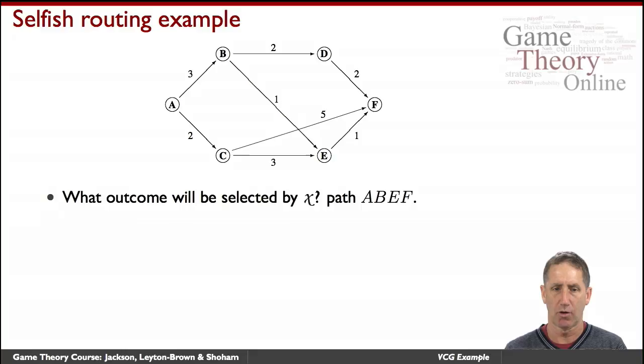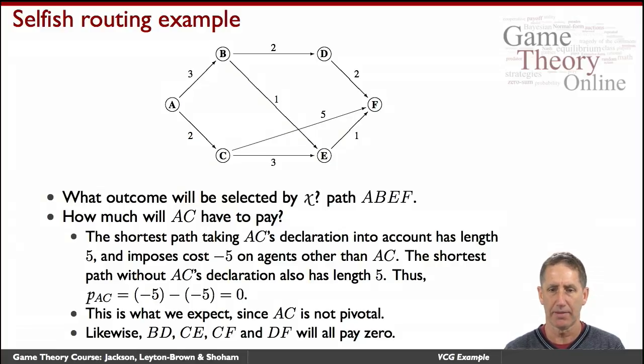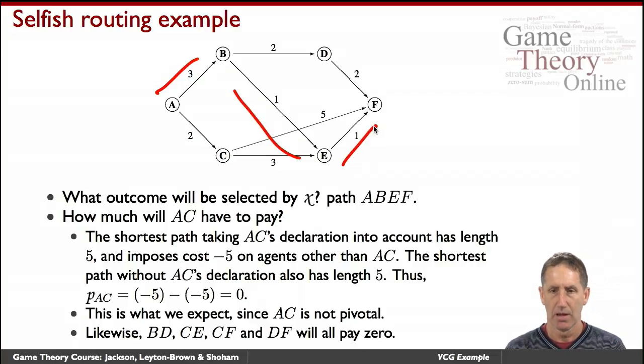Now, according to VCG, how much would the owner of the link AC pay? Well, intuitively, he's not part of the path, so he shouldn't have to pay or receive anything. Let's see what VCG says. The shortest path taking AC's declaration into account has length 5, and imposes cost of 5 on agents other than AC. Had AC not been in the picture, the total cost to the agents would have been the same path, so the cost would have been 5 also.